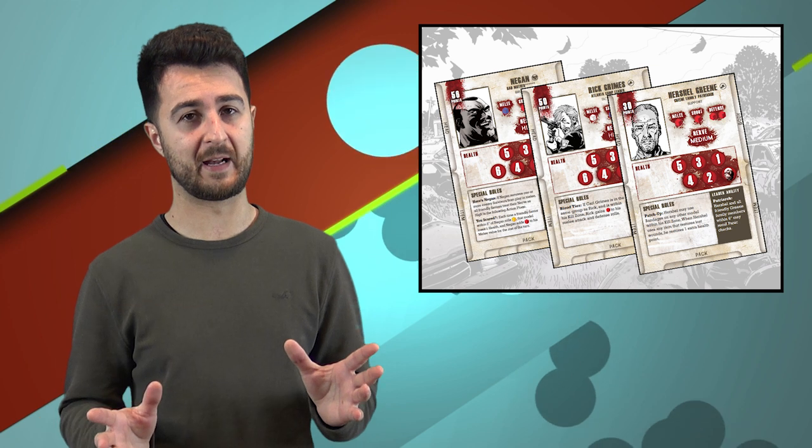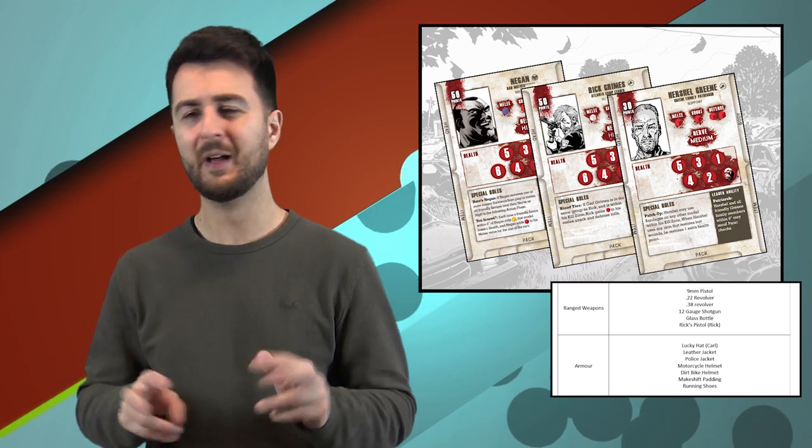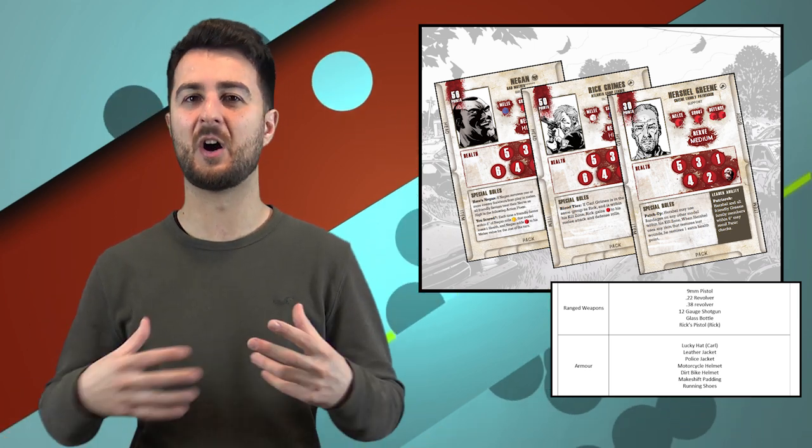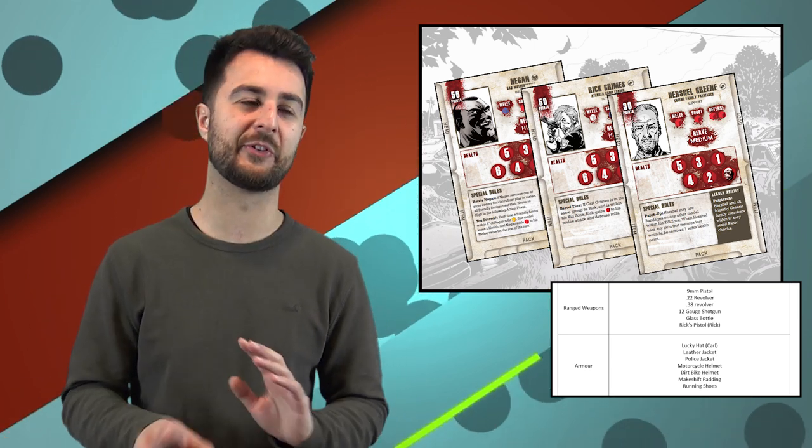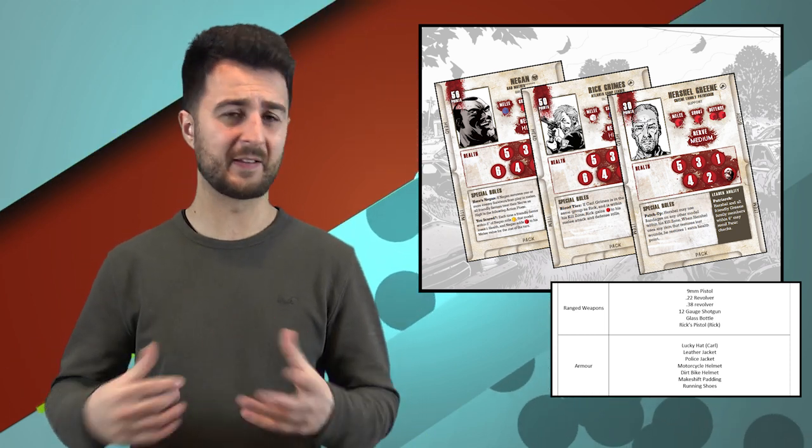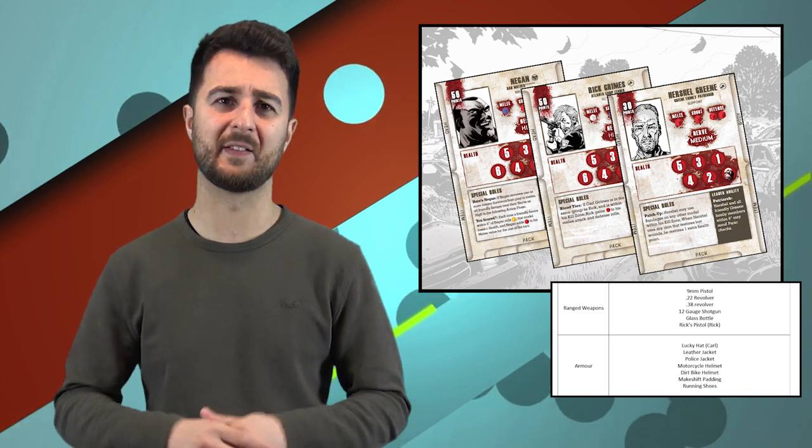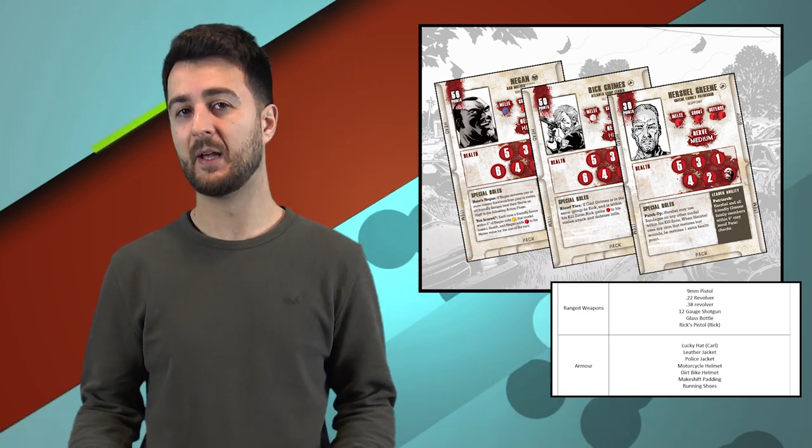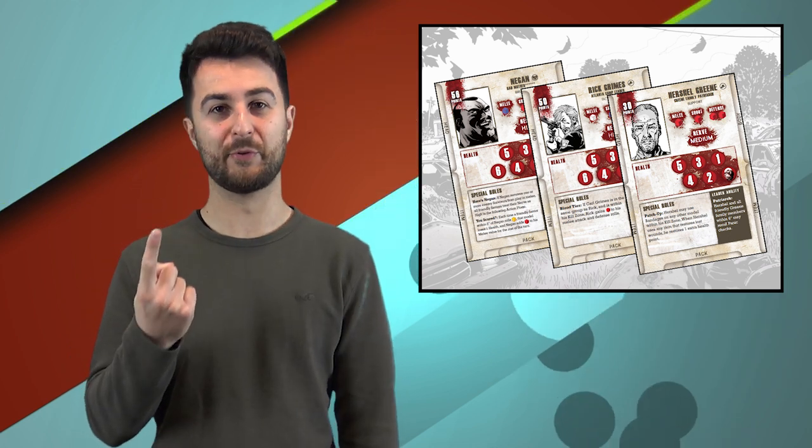Negan's got a baseball bat, so we'll have at least that or ideally Lucille. That's important for crew building. We start with 250 points and a very fixed pool of weapons everyone can scavenge. This filters out potentially powerful weapons you see at organized play events. Things like 9mm pistols, wrenches, and crowbars are available to everyone, but only one per crew. If Rick has a handgun, Carl needs a different weapon, keeping each crew thematic.